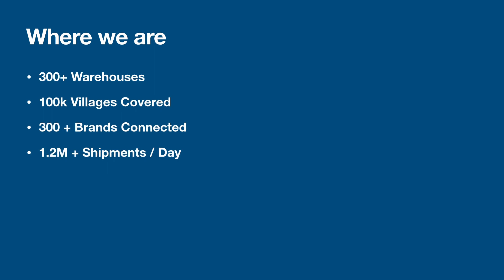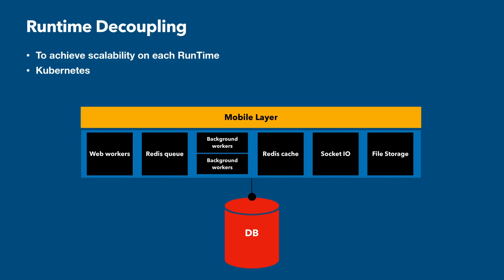But down the line, we grew heavily and continuously. Today we are on these crazy numbers: around 300 plus warehouses and continuously increasing, covered almost 100K villages across the country, connected to almost 300 plus brands in FMCG, and now delivering almost 1.2 million shipments per day. When we grew from those initial days to these statistics, we came across a lot of challenges — to improve our system, maintain it, and make it scalable to bear such loads. Today we will see what changes we made to scale our system and balance this real-time load.